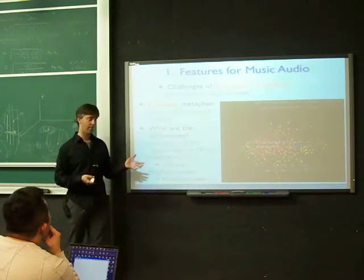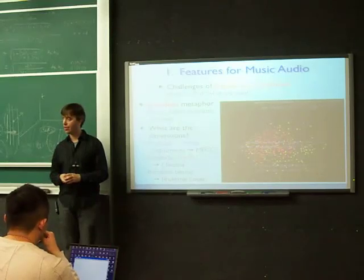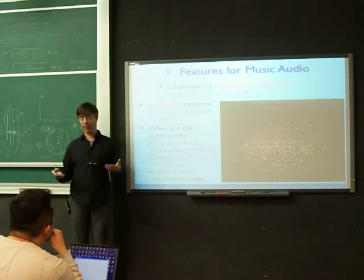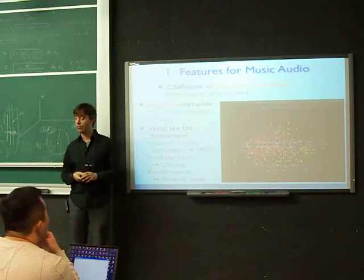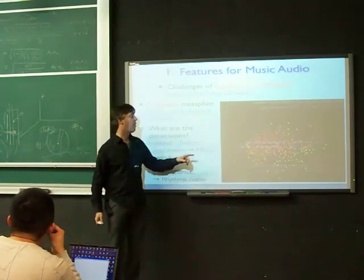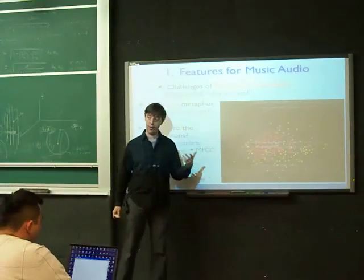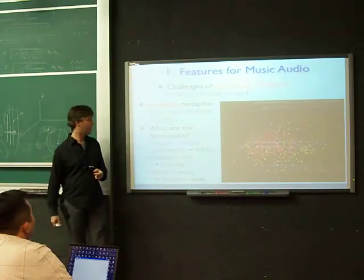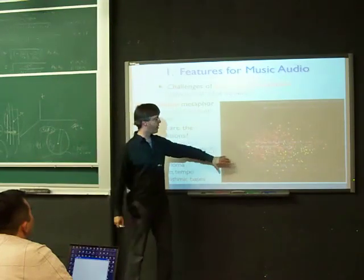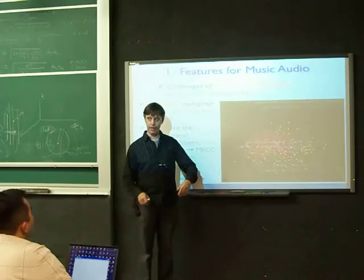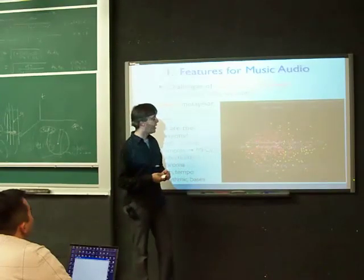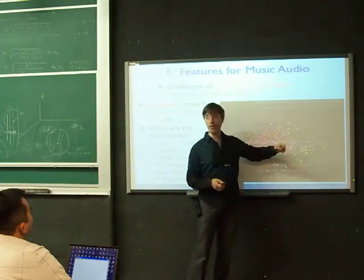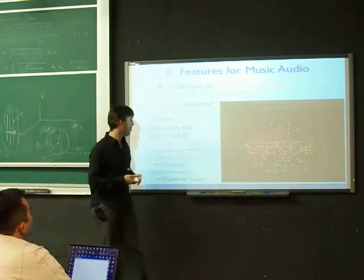We can define some signal processing features, and if we define them right, we can calculate them for an entire track. We can represent that track as a point in high-dimensional space whose coordinates are given by these features. Then we try to construct a space such that neighborhoods correspond to similar kinds of music - music that the listener would consider similar. So if you want to find a particular piece of music, you can say you're looking for something a bit like this, go to that point in space, and explore the neighborhood.